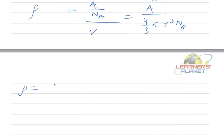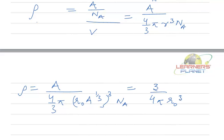Now in this expression, if we replace r with the rule that is given above, it will be written as r0 A to the power 1 by 3, and this is full cube, times Na. You can clearly see that this expression is independent of A. It is 3 by 4 pi r0 cube times Na.